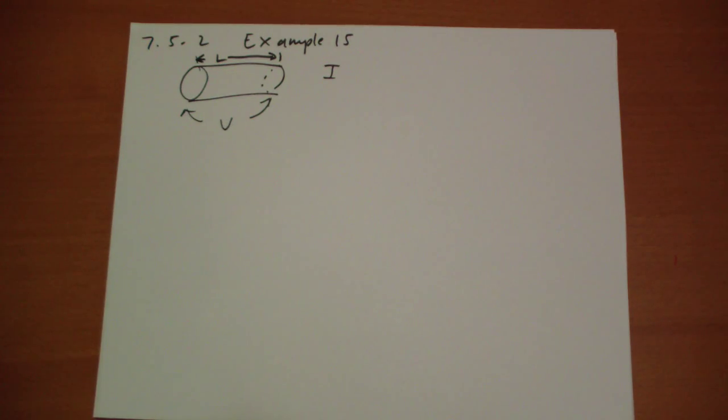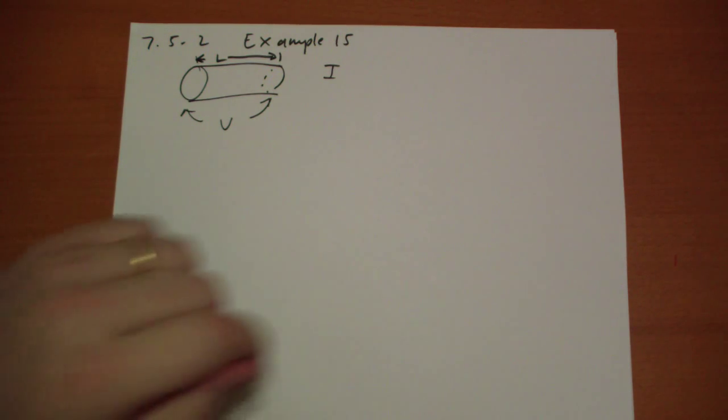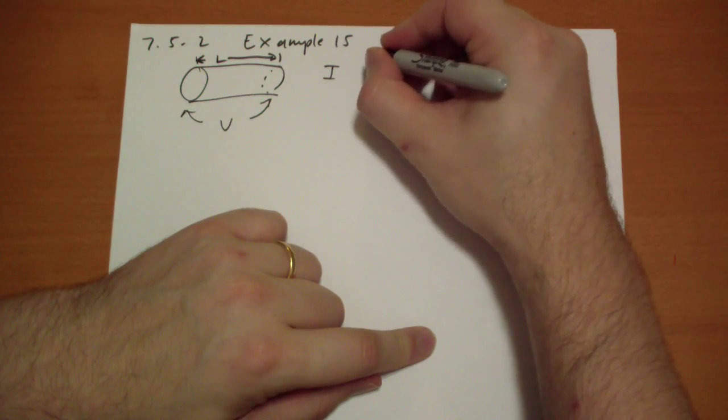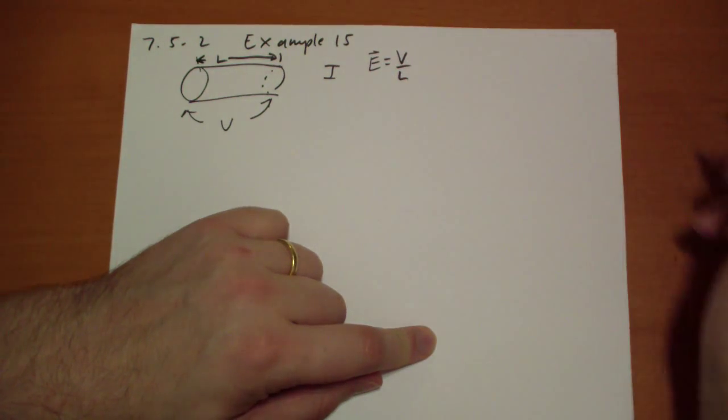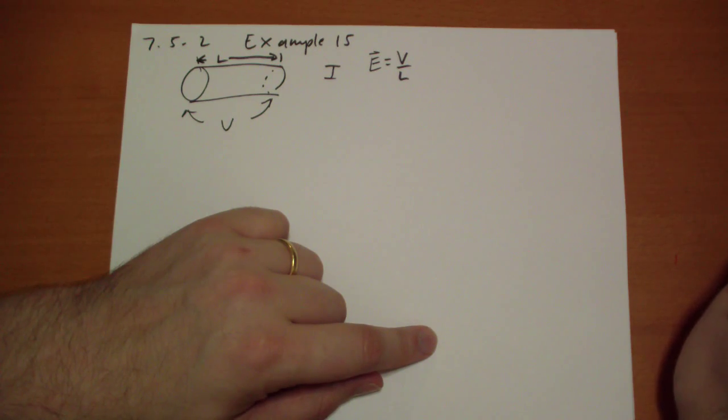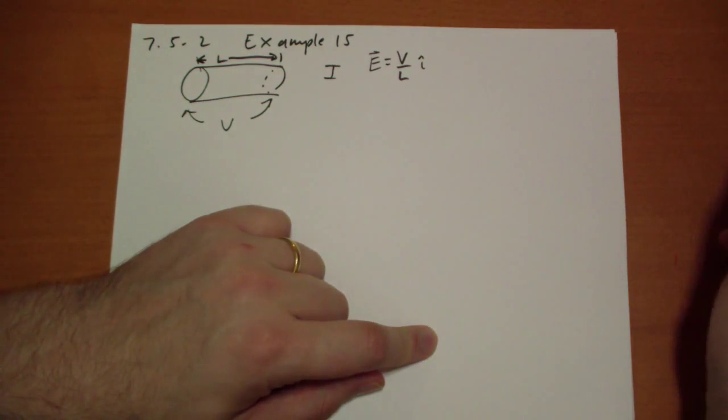And we have E is just V over L in one of those directions, let's say it's just I hat.